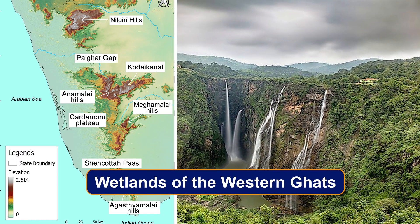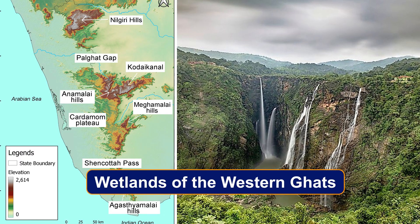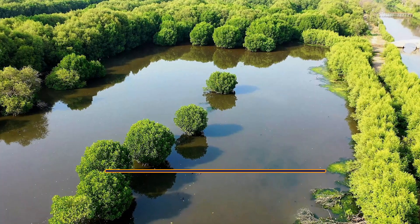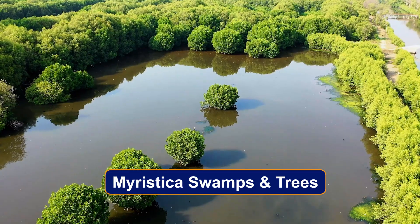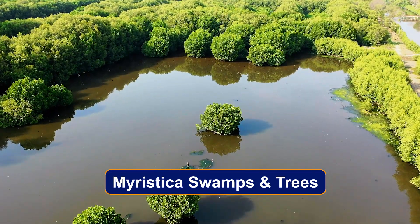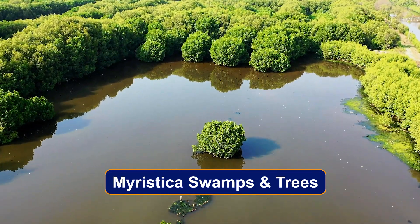Wetlands of the Western Ghats: The Western Ghats, one of the biodiversity hotspots in India, is crisscrossed by numerous rivers and streams giving rise to swamps and marshes. The Myristica swamps found in the region are dominated by Myristica trees.